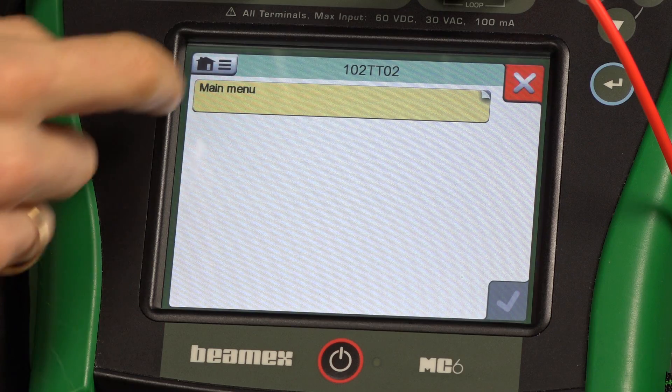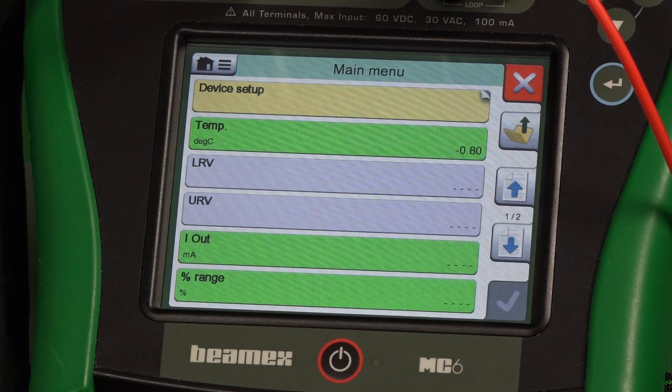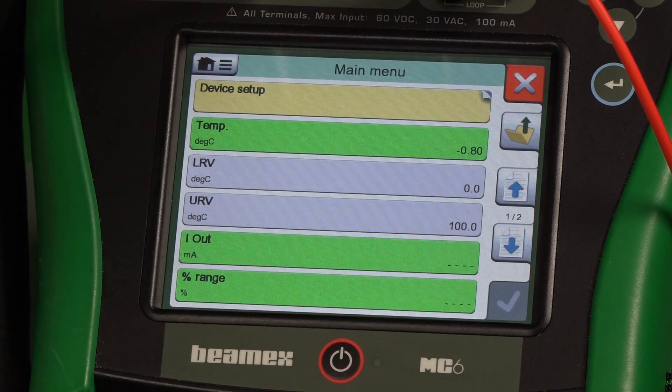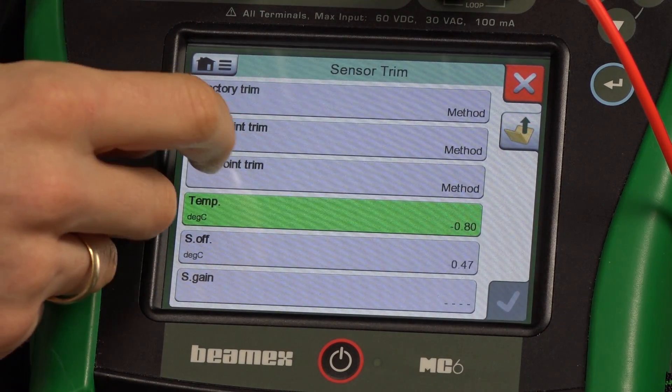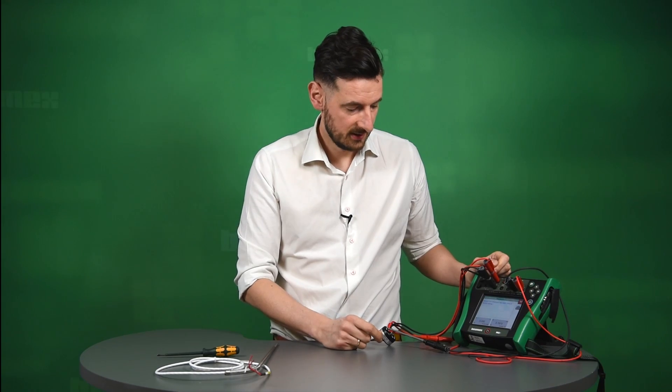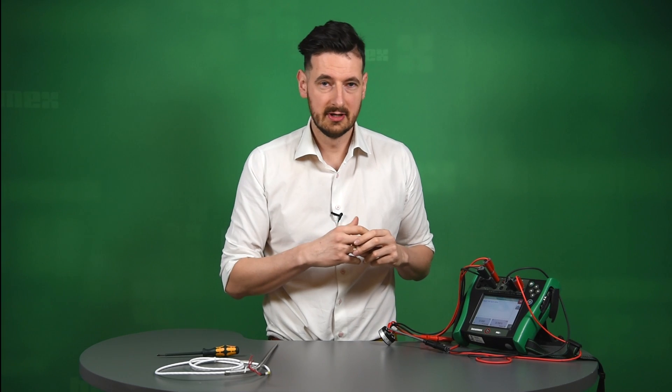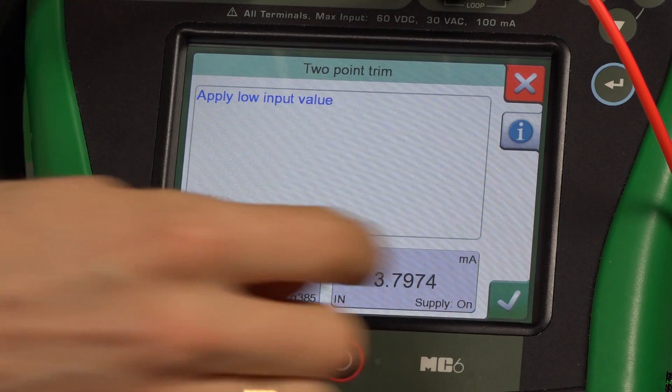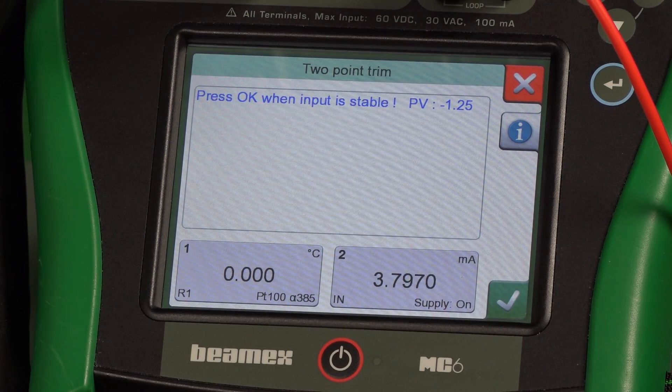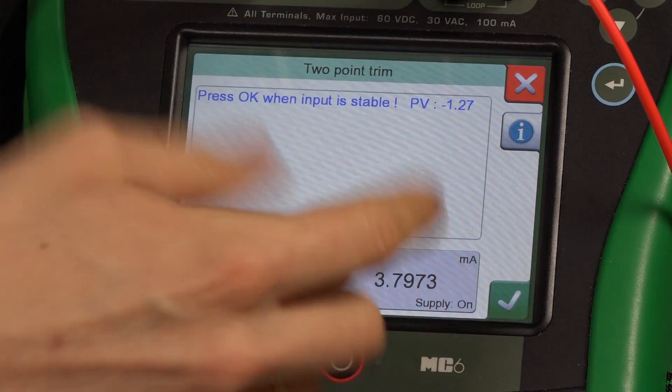It's going to give us some options here, the tags and the ranges, but we're not interested in that. We would like to trim that transmitter. So we're going to go to diagnostic and service. We're going to go to sensor trim and we're going to go to two-point trim. We recommend doing two-point trim because you want to do a lower and the upper trim. We're also going to do the analog trimming. There's going to be a graphic shown here somewhere. So we can just have a look at why we're doing both, but they are in series. So we have to do both.